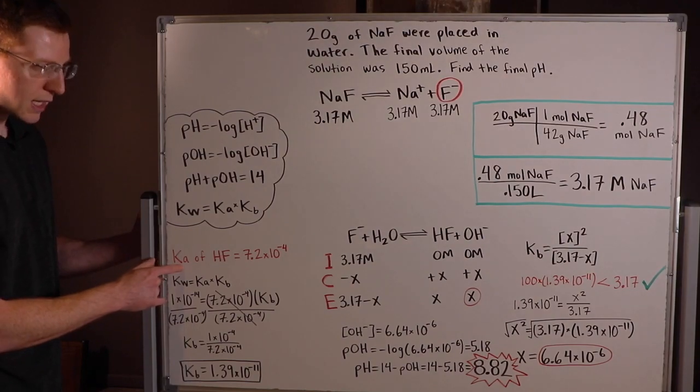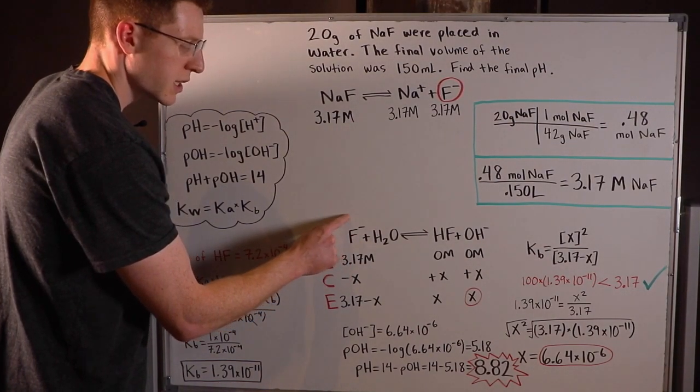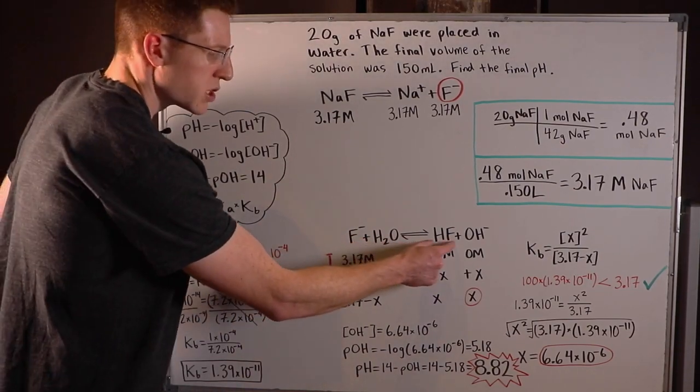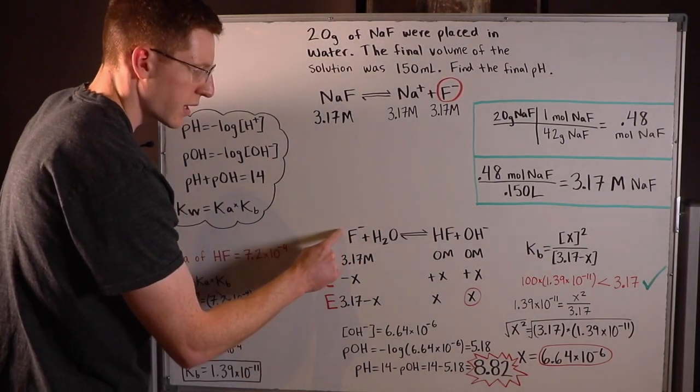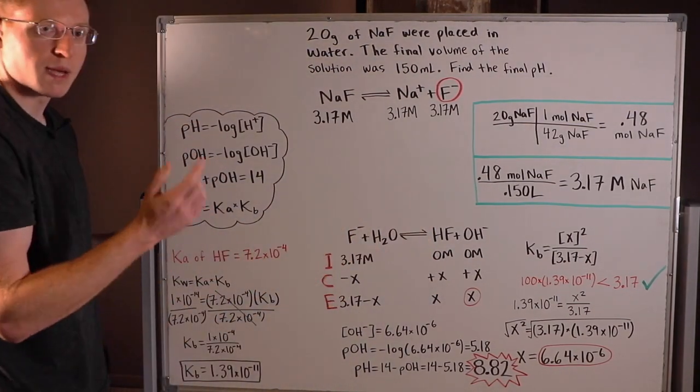So this is a Ka, but we need the Kb because F- is acting as the base. The Ka you can sort of think of is HF going to H+ and F-, but F- going back to HF is a base. It's Kb.